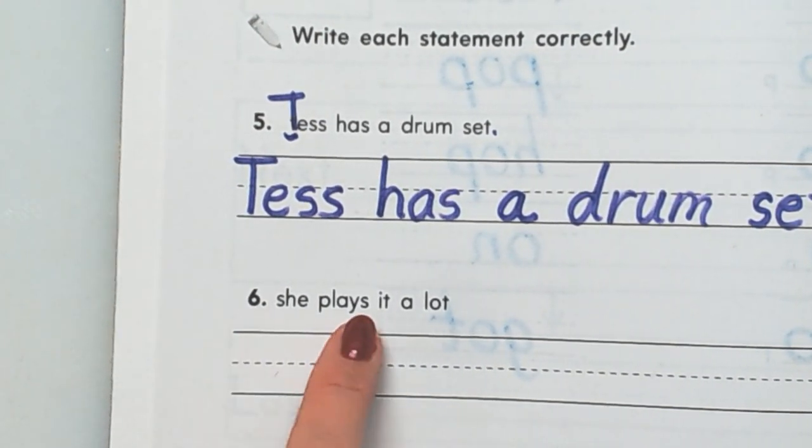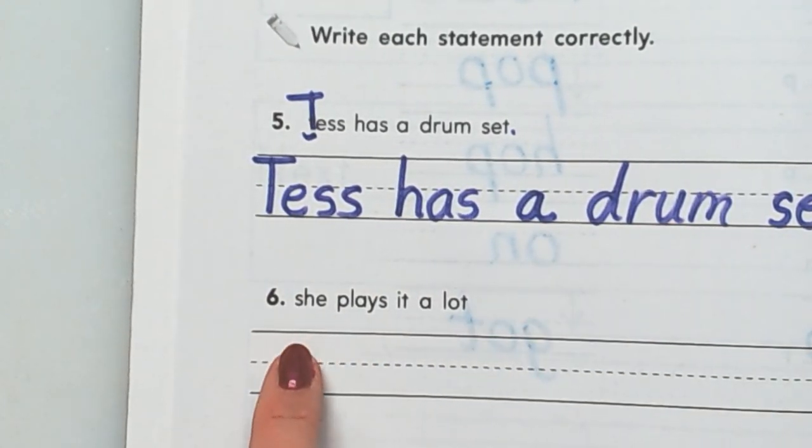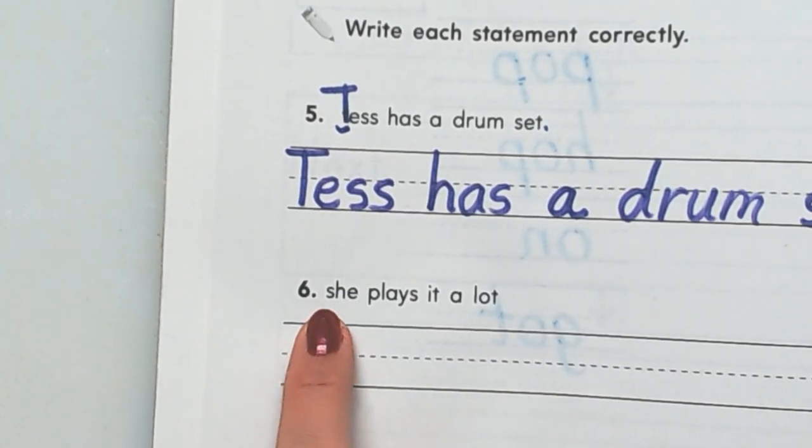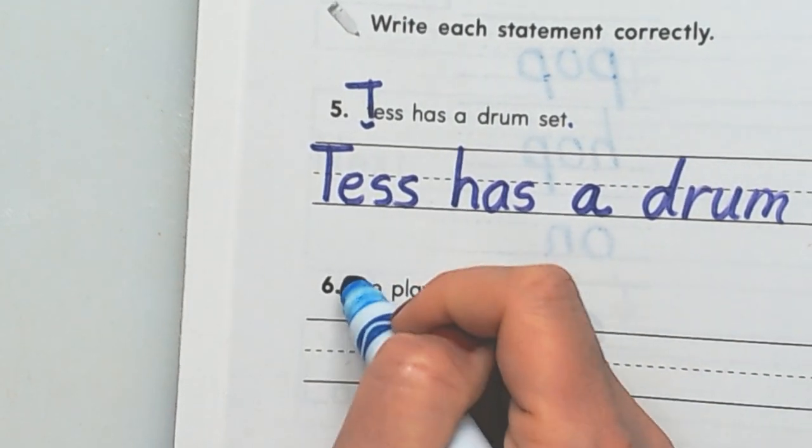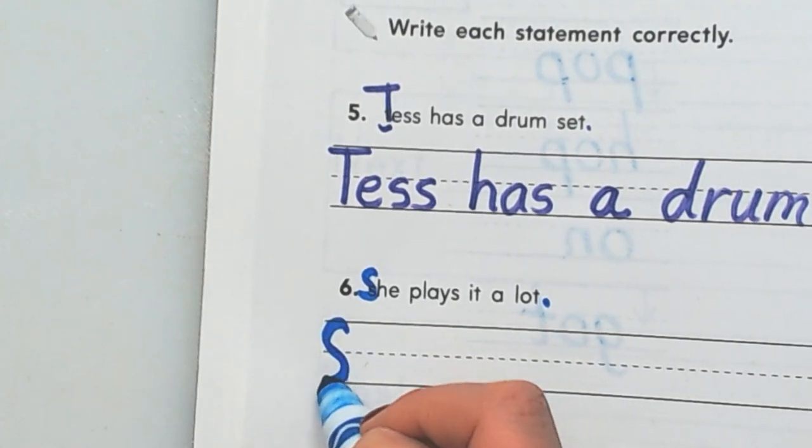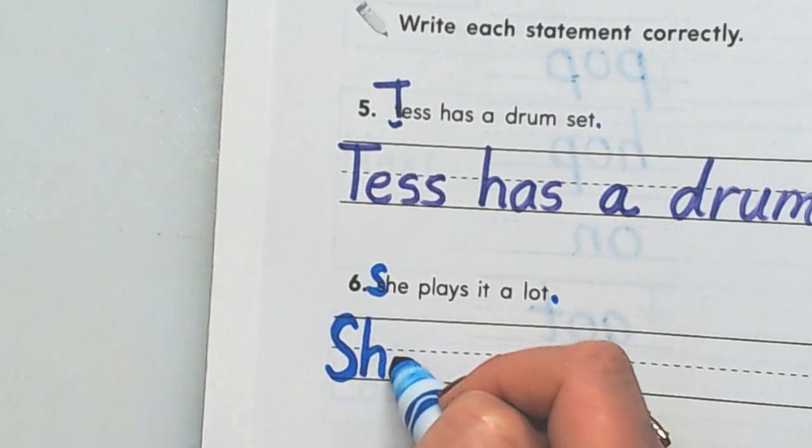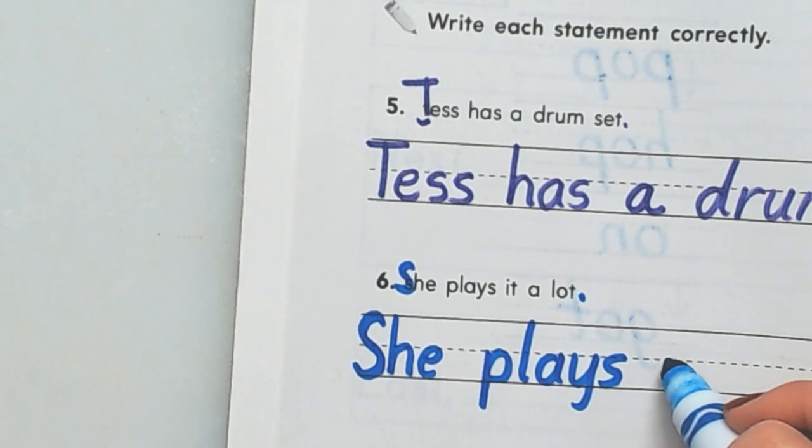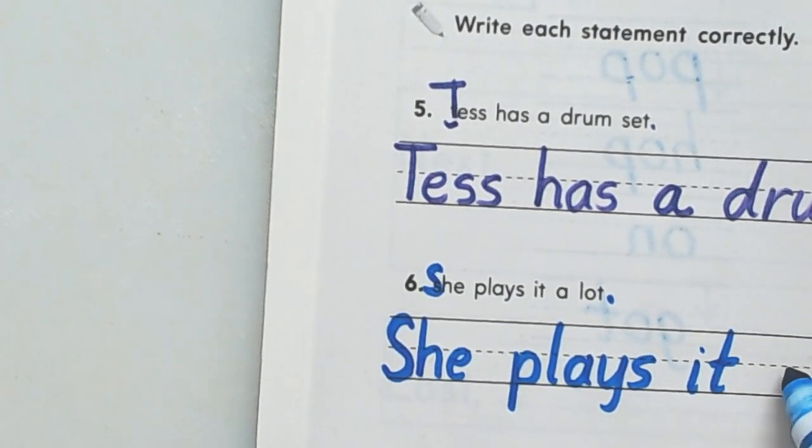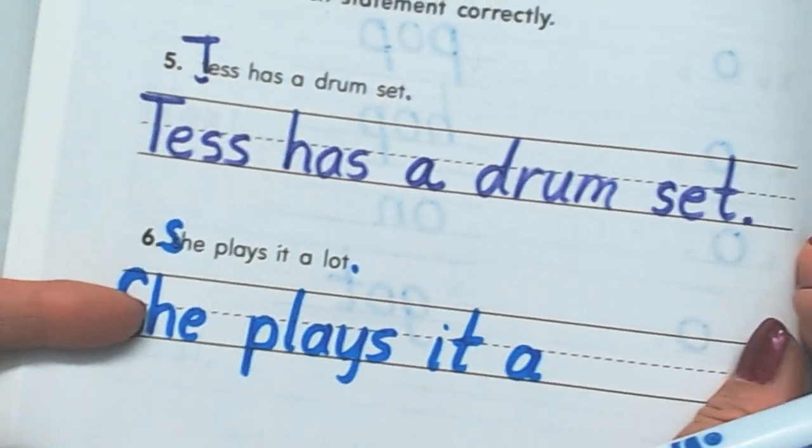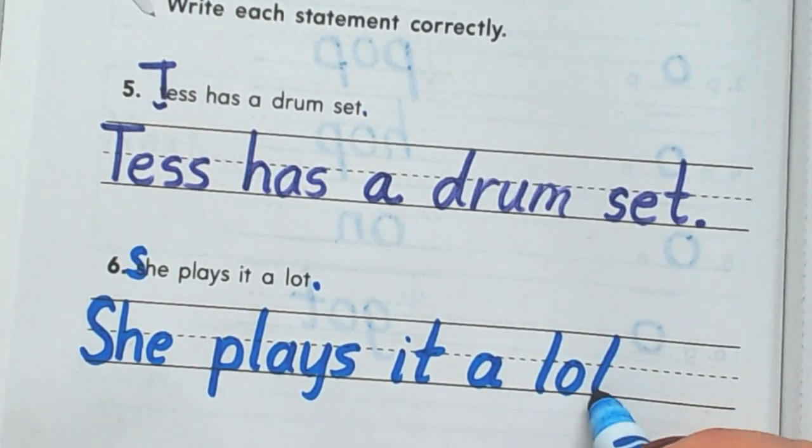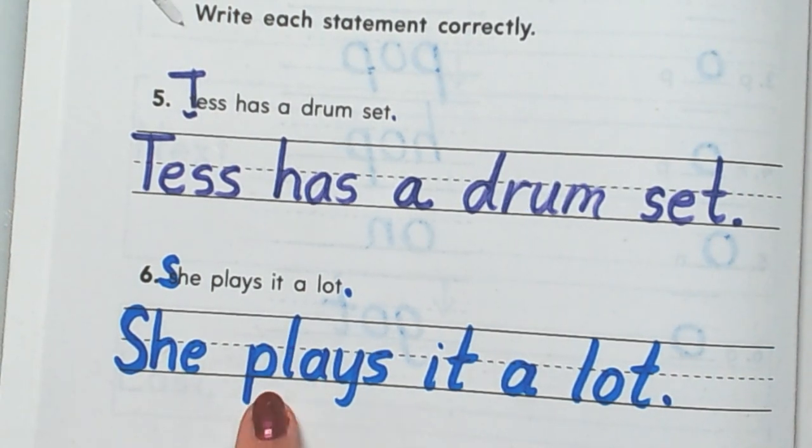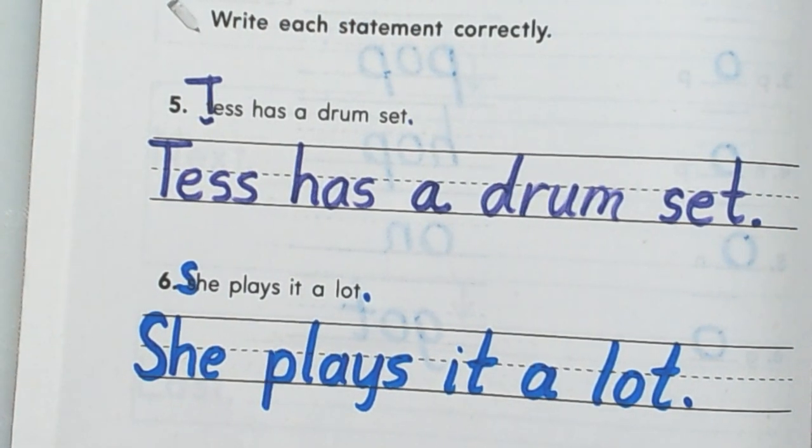Okay, let's do she plays it a lot. They're talking about Tess who has a drum set. She plays it a lot. What's wrong with that sentence? I mean that statement. They didn't begin with a capital letter and they didn't end with a period. So let's correct it. And then let's write it. She, we have to start with a capital letter. She, finger space, plays. Finger space. It, finger space. A, finger space. Whoops, I'm running out of room there. Lot. That tells something. She plays it a lot. So that's who, she, and then this is what she does. Plays it a lot. Starts with a capital letter, ends with a period. We corrected that statement.